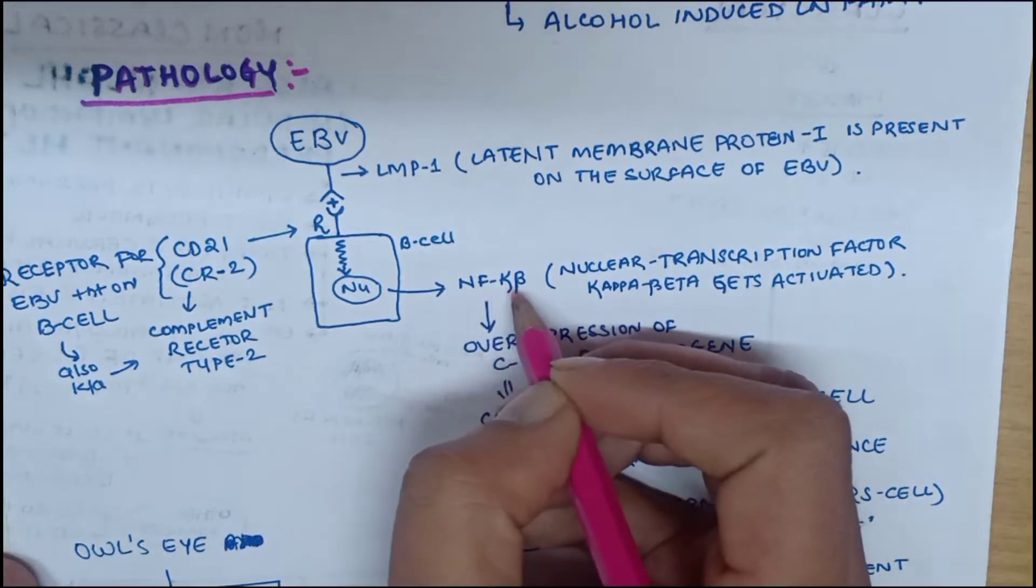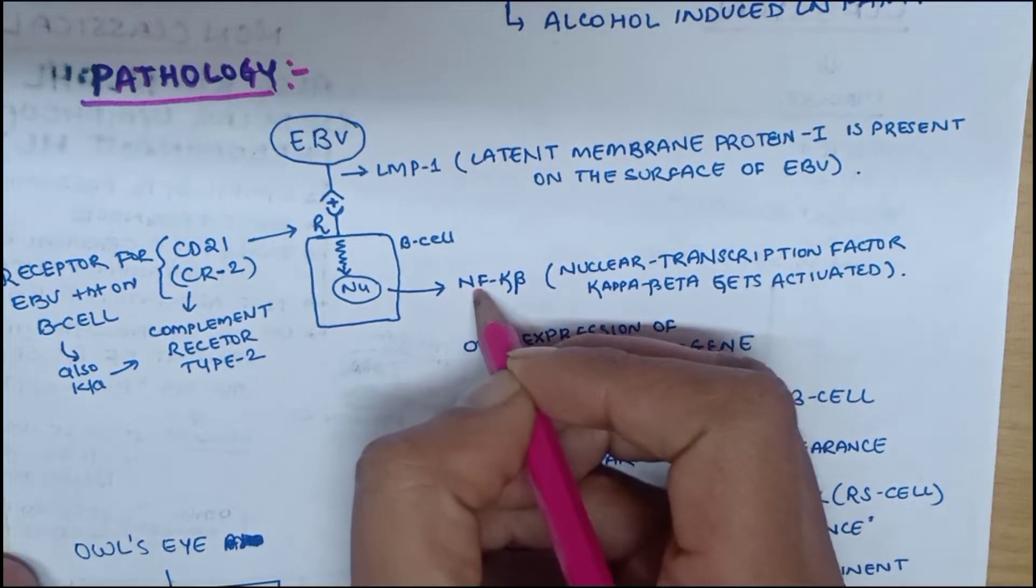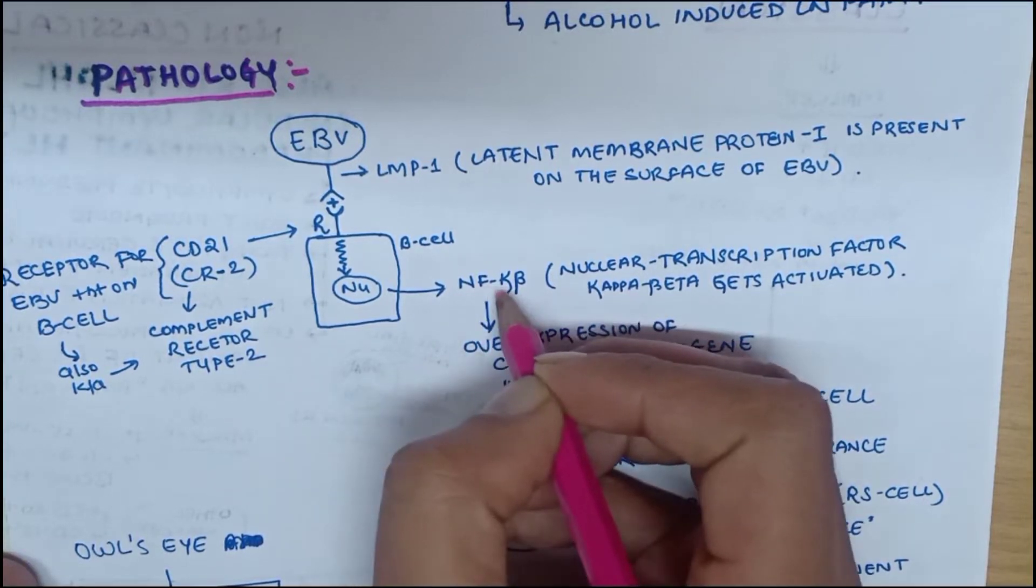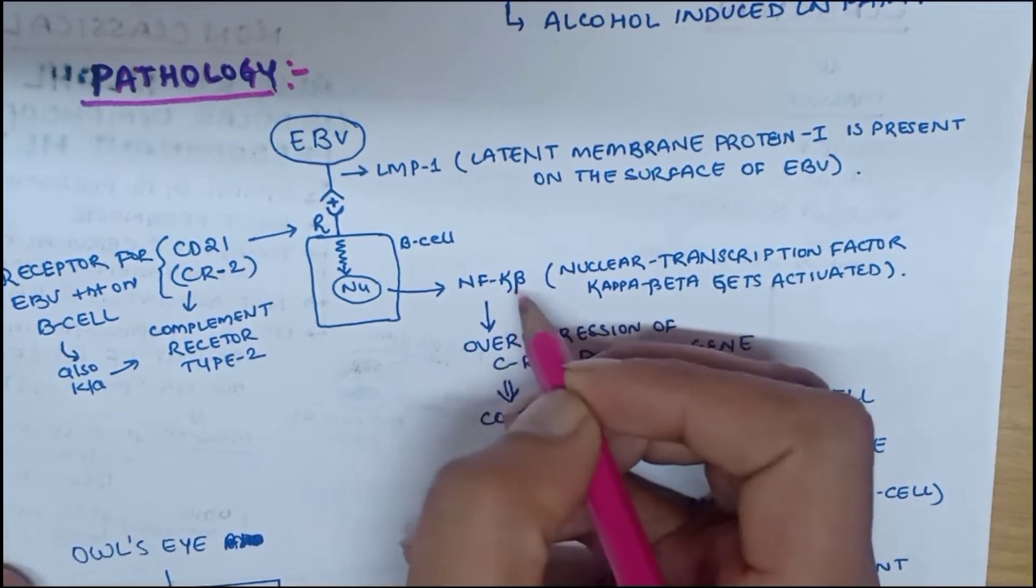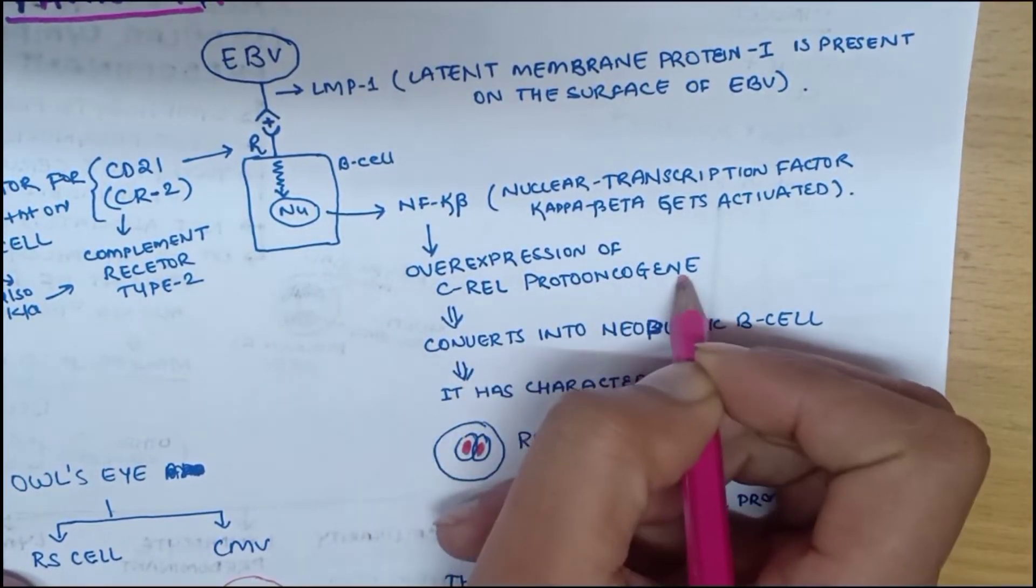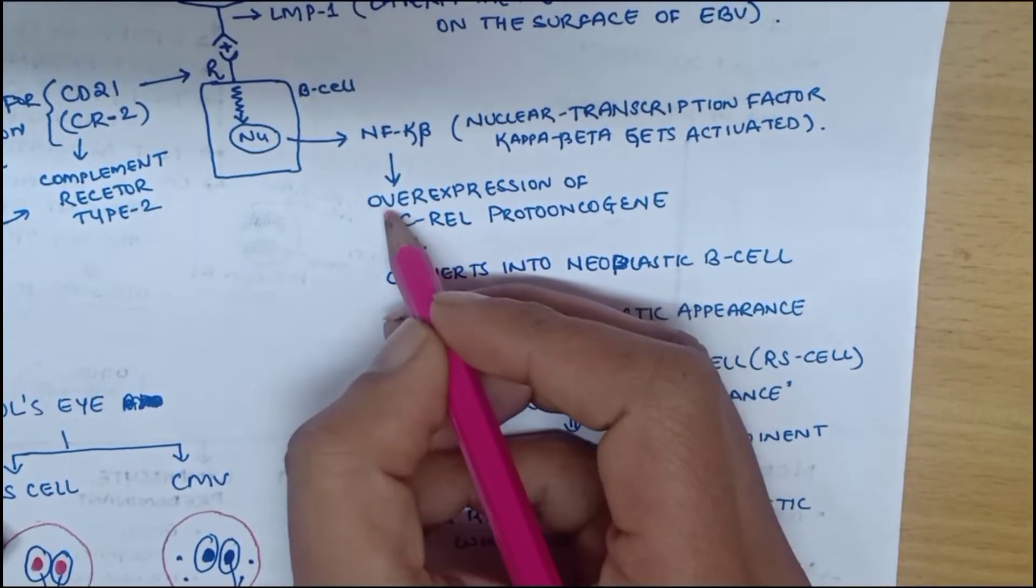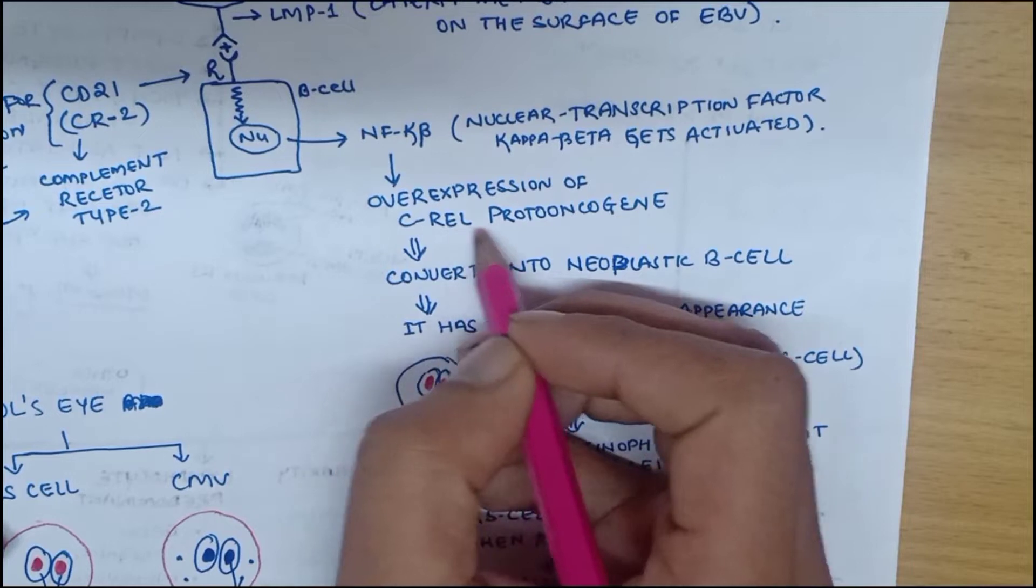Nuclear transcription factor kappa beta, once activated, will cause overexpression of C-rel proto-oncogene. This overexpression will convert the B cell into a neoplastic B cell.